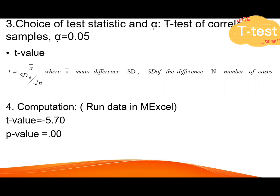We are using the t-test of correlated samples with alpha at 0.05. The formula — you can Google the formula for the t-test — is: t equals the mean difference of their scores divided by the standard deviation of the difference divided by the square root of the number of cases, which is 15. You may compute this using Microsoft Excel or SPSS. The t-value is negative 5.70 and the p-value is 0.000.